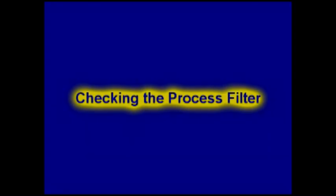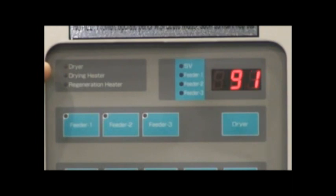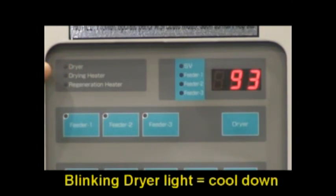When checking the main drying process filter, first turn off the dryer in order to shut down the blowers. A delay timer will turn off the heaters, but allow the blower to run for 10 minutes in order to cool down the heaters, thus avoiding an overheat condition when restarting.